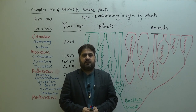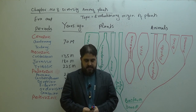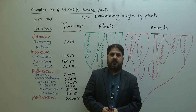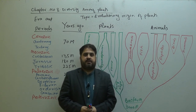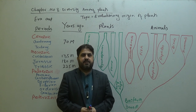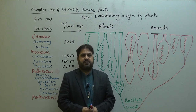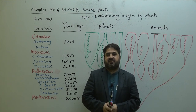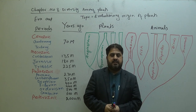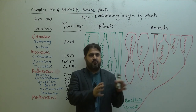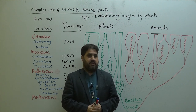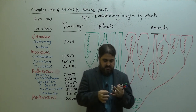Today we are going to start the next chapter, chapter number eight: Diversity Among Plants. Diversity among plants means variation among plants, varieties of the plant. In this chapter we will only focus on plants — what are their properties? What are their characteristics?